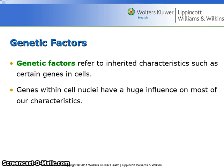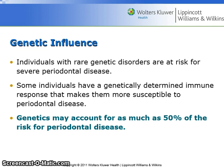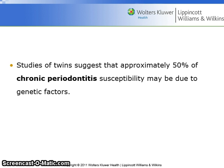Genetic factors refer to inherited characteristics such as certain genes and cells. Genes within cell nuclei have a huge influence on most of our characteristics. Observations that severe periodontitis can occur in successive generations of some families led to speculation about the role of genetic factors in periodontitis. Some individuals have a genetically determined immune response that makes them more susceptible to periodontal disease. Genetics may account for as much as 50 percent of the risk for periodontal disease, and studies of twins suggest approximately 50 percent of chronic periodontitis susceptibility may be due to genetic factors.